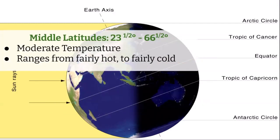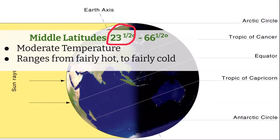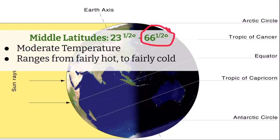The middle latitudes run from 23 and a half degrees to 66 and a half degrees north and south, and feature moderate temperatures. If you're closer to the 23.5 degree end, it's going to be warmer year round. The closer you get to 66.5 degrees, the colder it will be. At around 25 degrees latitude, temperatures might range from 65 to 85°F, with mild winters. At 66.5 degrees you could get near zero in winter and 70°F in summer — so there are clear seasons with a wide temperature range.